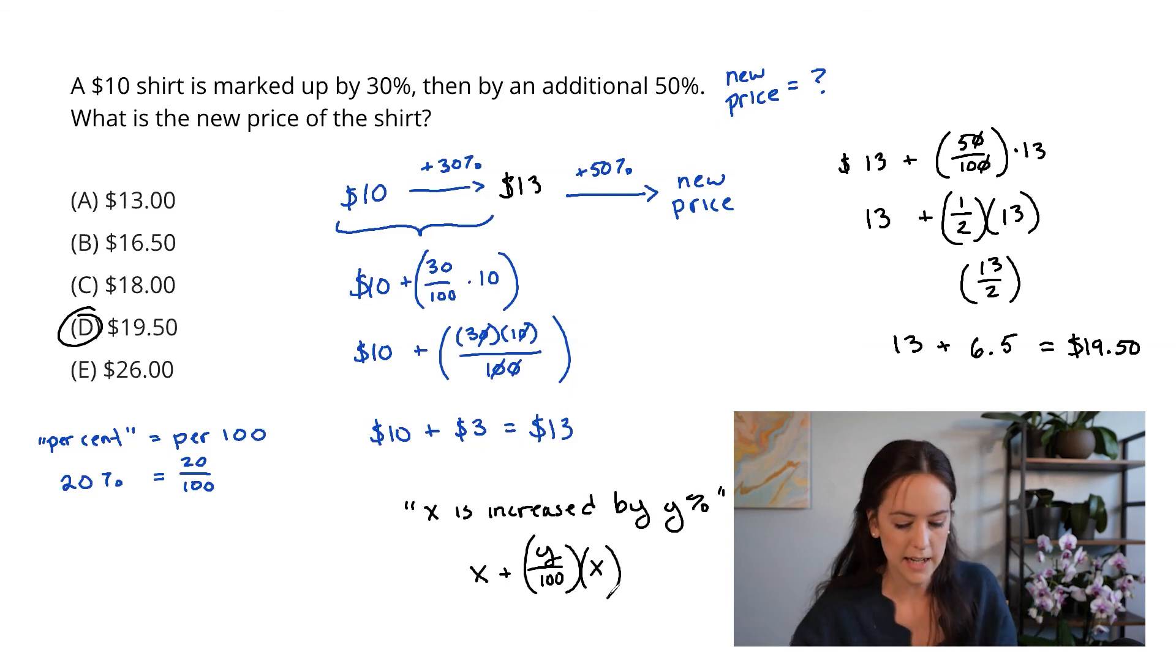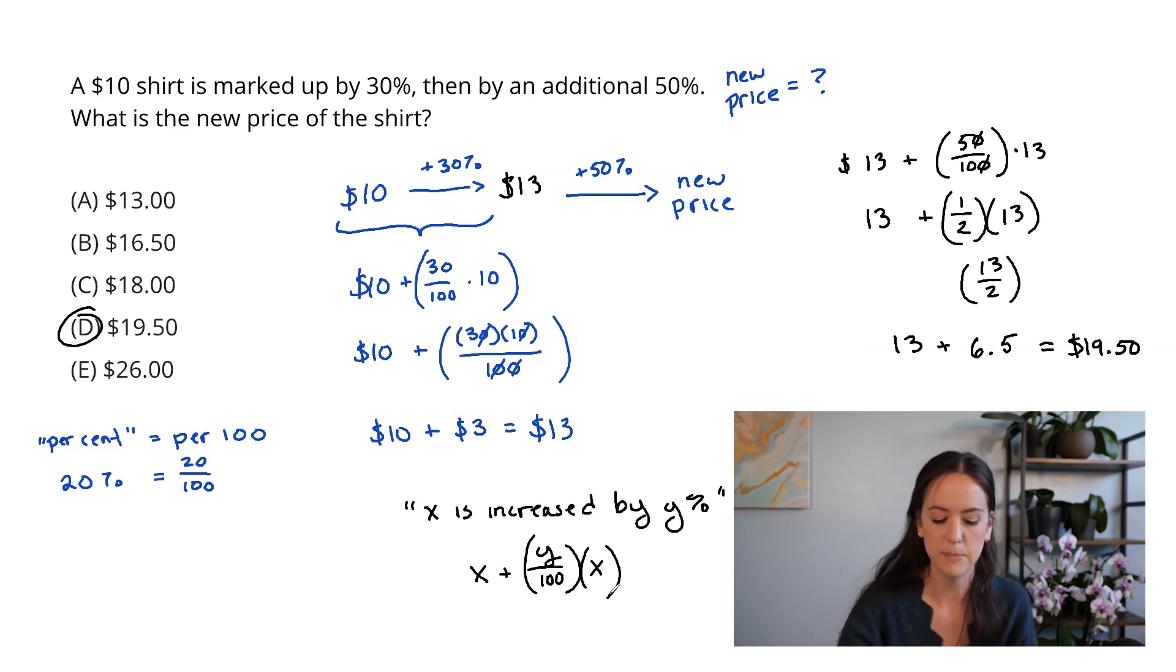Now, this might look a little weirder than what we've been doing, but it's actually the exact same thing as up here. We had 10 plus 30 over 100 times 10. And down here, we have the exact same thing, just with variables. And if this were decreased by Y percent, by the way, we would just subtract here instead of adding.